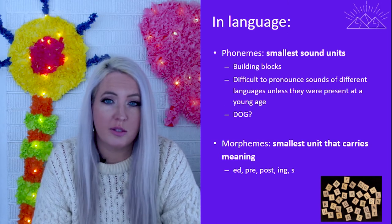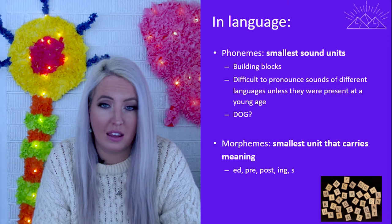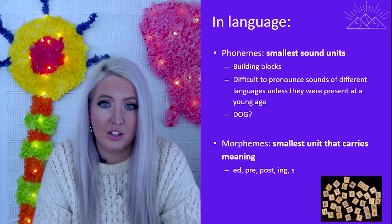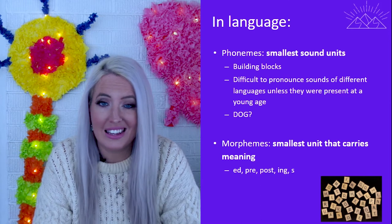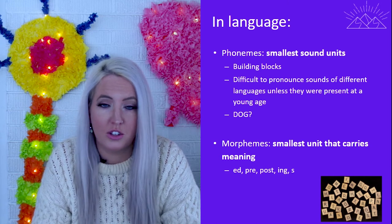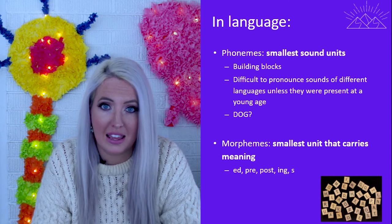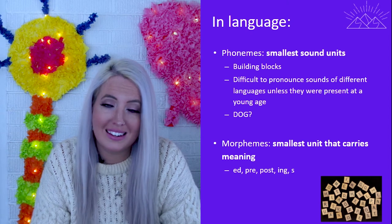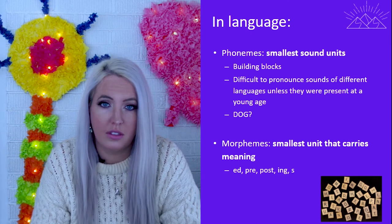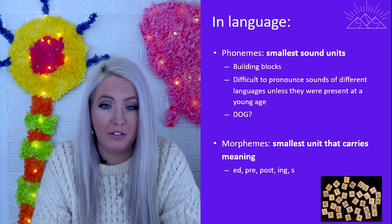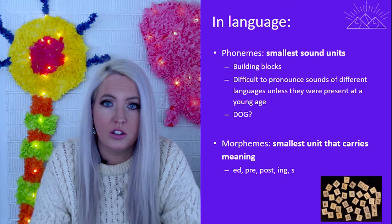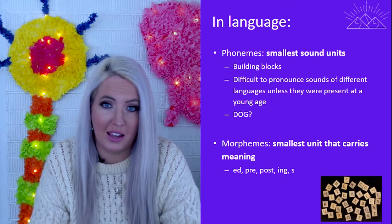Morphemes, on the other hand, are the smallest units that have meaning. They could be a whole word or a part of a word — things like '-ed' at the end of a word to indicate past tense, or '-ing' to indicate something taking place right now. Or it could be an entire word like 'dog,' which is the smallest unit in that word that carries meaning — the animal. So these are the first steps to establishing language.